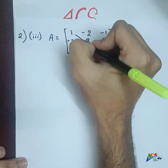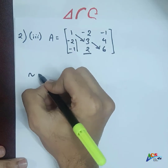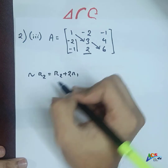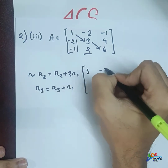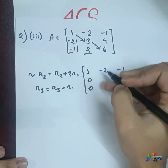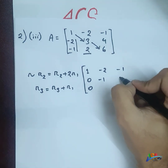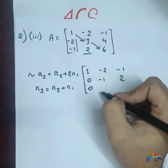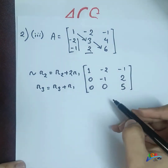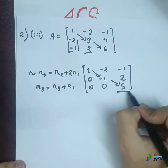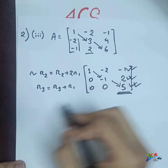For this matrix, my first priority is to make the leading diagonal work. So I apply: R2 = R2 + 2R1, and R3 = R3 + R1. After calculating: row 1 stays as is, the second row gives zero, minus one, and I get minus one. The third row gives zero, and I calculate zero and five.